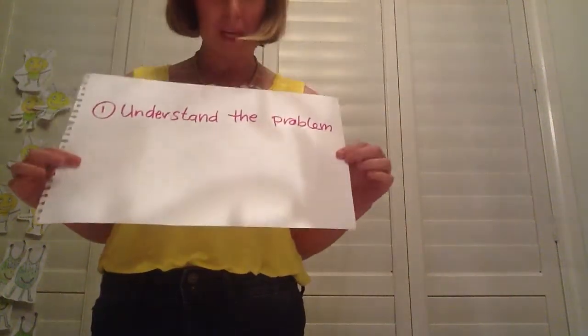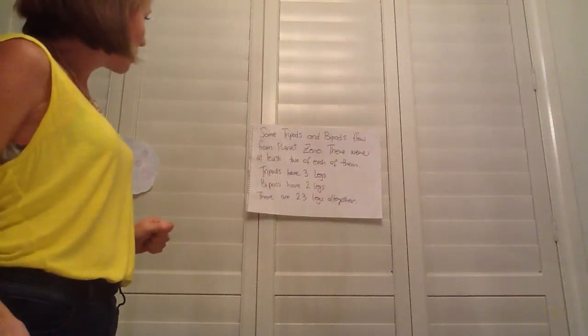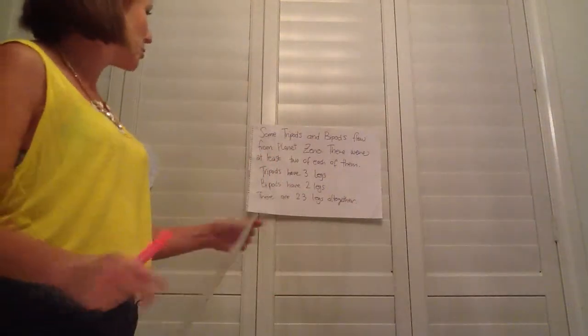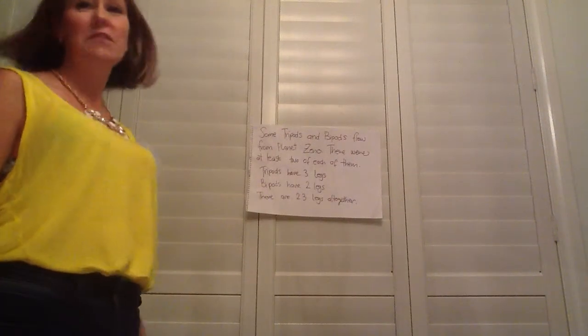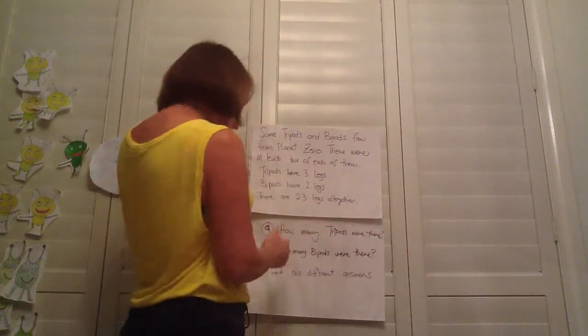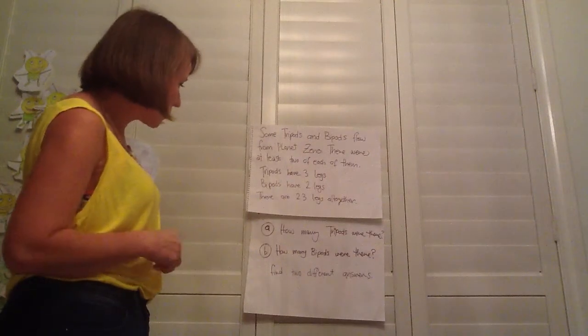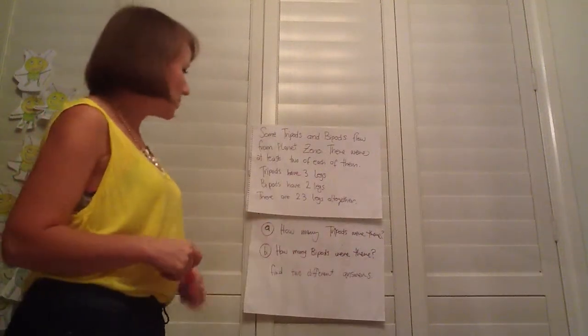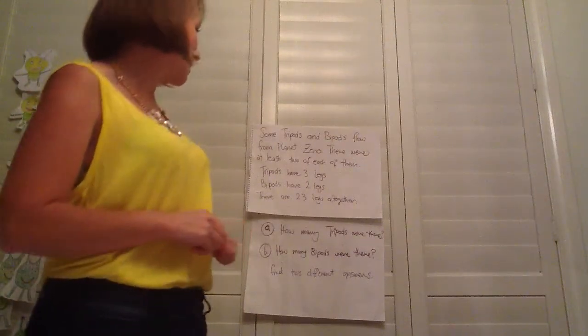So first, we're going to begin by understanding the problem. So this is the problem here. Some tripods and bipods flew from planet Xeno and there were at least two of each of them. Tripods have three legs, bipods have two legs and there are 23 legs altogether. So we have to find out how many tripods there are and also how many bipods were there. And we also need to find two different answers to this problem.